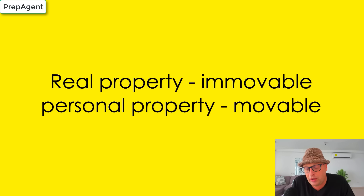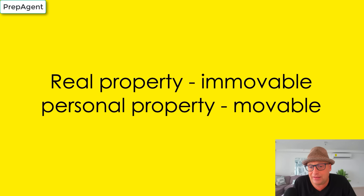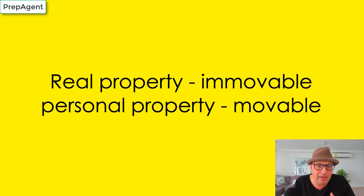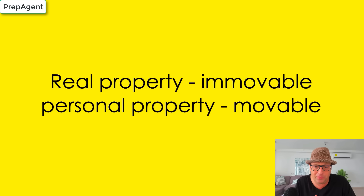What are some examples? The example of real property is the house itself and anything that's attached to that house. Personal property are things that go with the person, like a set of keys. A lease is actually considered personal property as well because it's a contract with the person, not with the real estate. Real property is immovable, personal property is movable. Got to know that concept.